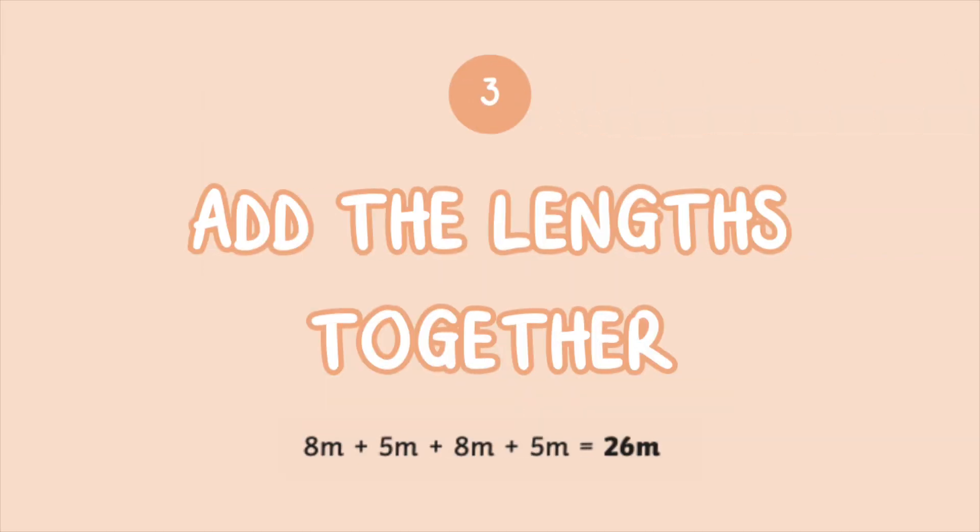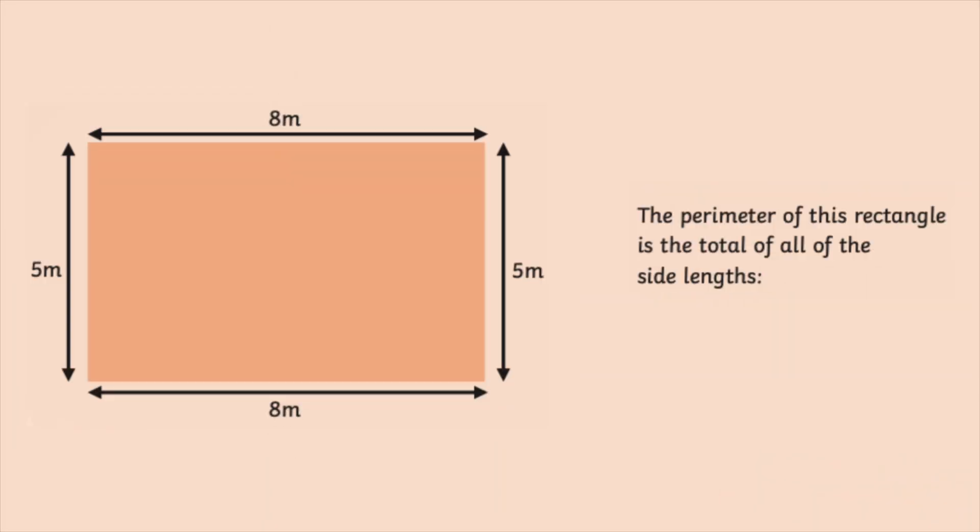Last, add the lengths together. To find the perimeter, add up all the lengths of the sides. This gives you the total distance around the shape.